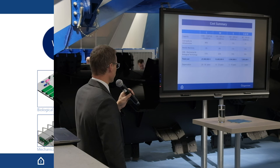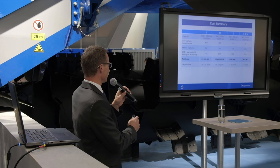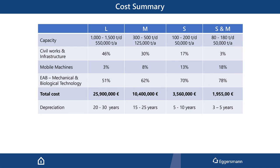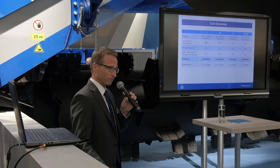Looking at the total cost — and please note this includes civil works, all mobile machines, and of course the processing technology in terms of mechanical and biological treatment — we are talking roughly 25 to 26 million euros investment cost for facilities between 1000 and 1500 tons per day. We talk about 10 million for facilities up to 500 to 1000 tons per day, and less than 2 million investment cost for the small and mobile facilities, which can process nearly 200 tons per day of household waste. There are possibilities, especially from Eggersmann, with technology that suits every budget.